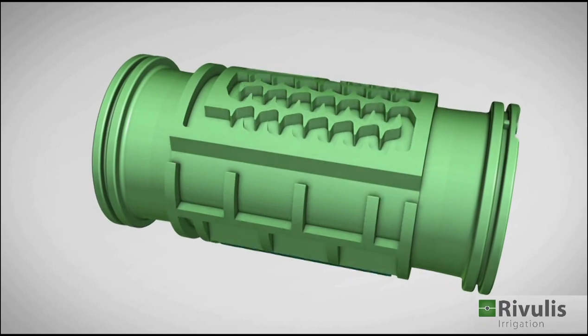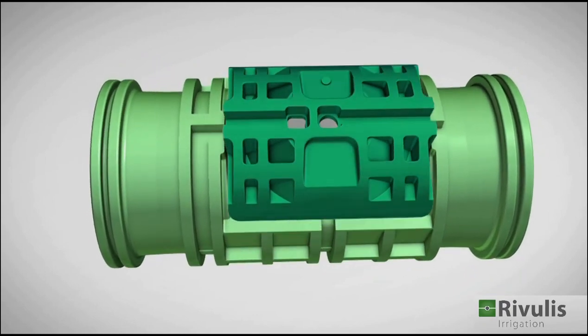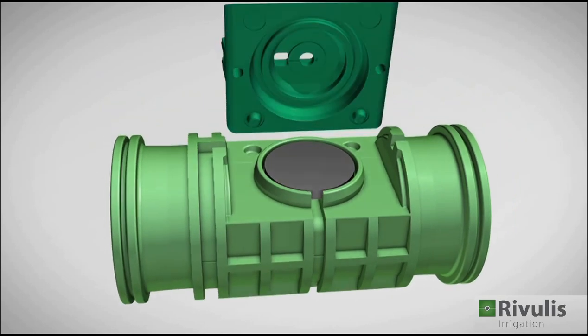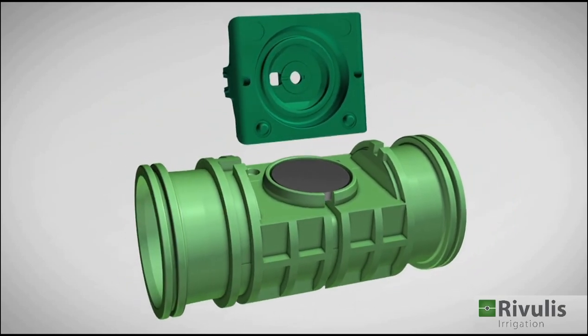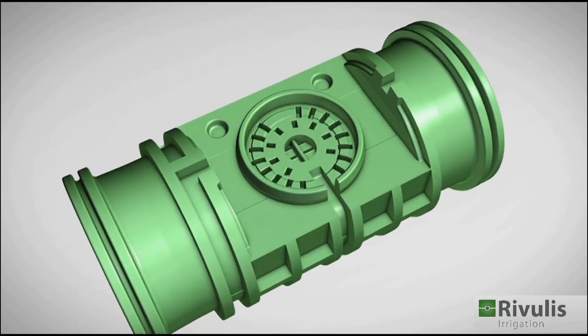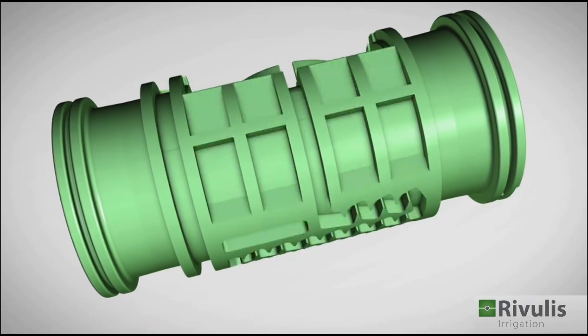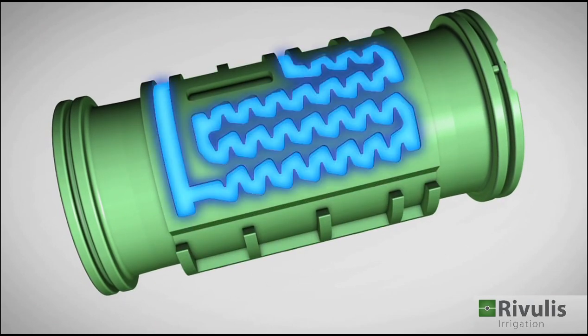The Hydro PC is a flow regulating dripper made up of three parts: the dripper body, the top cover, and the flow regulating diaphragm. Each dripper has its own inlet filter with a large filtering area, an efficient and accurate labyrinth, and two outlet chambers with a connecting channel.